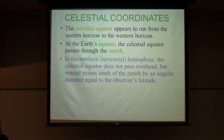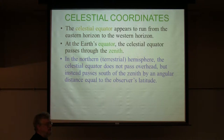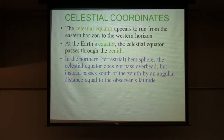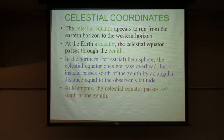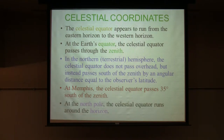The latitude of Memphis is 35 degrees, so the celestial equator passes 35 degrees south of directly overhead. It still starts at the eastern horizon and goes straight to the western horizon — that's on your handout star maps and on the planisphere as well. At the North Pole, the celestial equator goes all the way around the horizon, and Polaris is straight overhead.